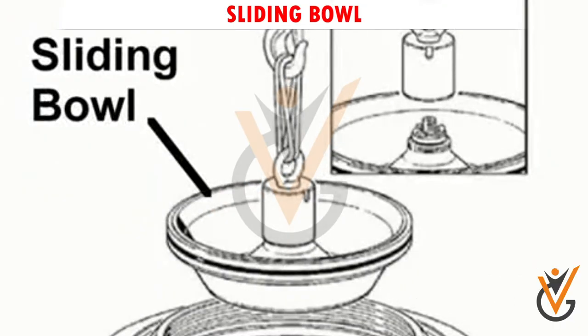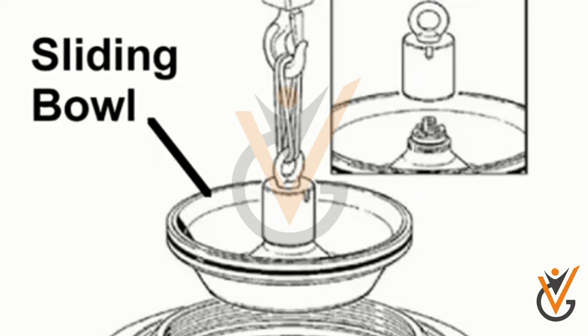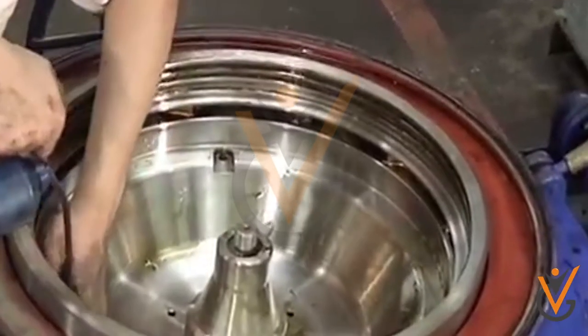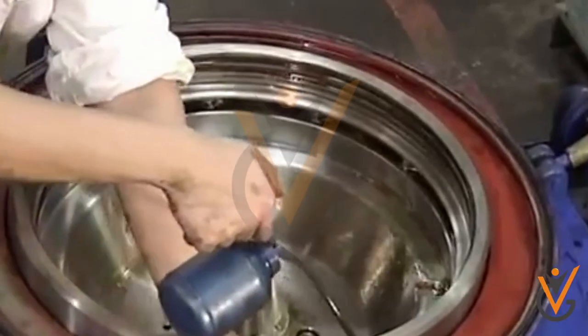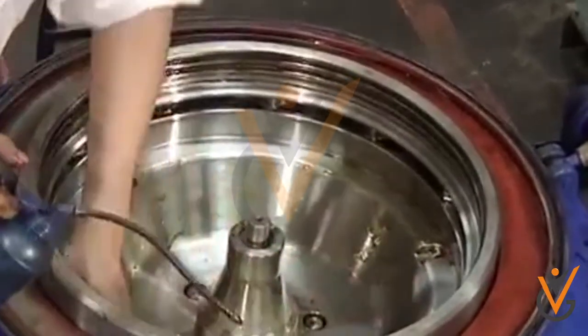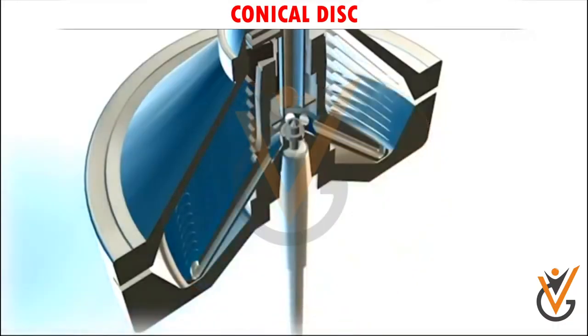Sliding bowl lifts when operating water is fed by covering the sludge ports, and sits back when operating water is removed and sludges are removed.